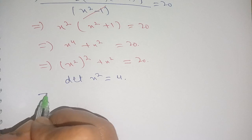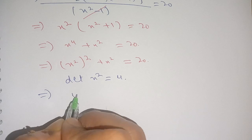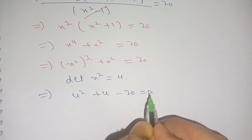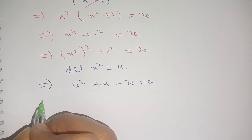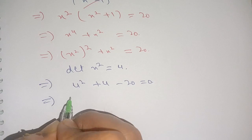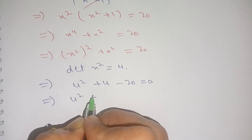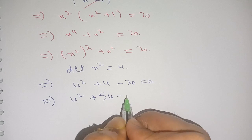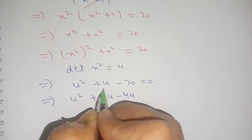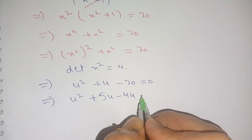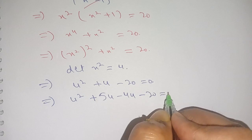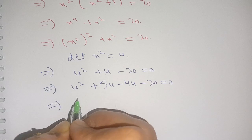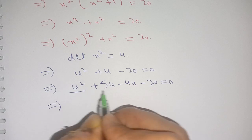Now we let x² = u. Substituting, we get u² + u = 20, so u² + u - 20 = 0. In the next step we break the middle term: u² + 5u - 4u - 20 = 0.